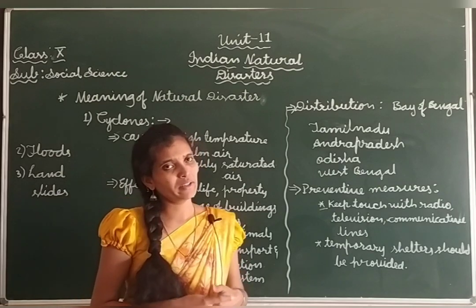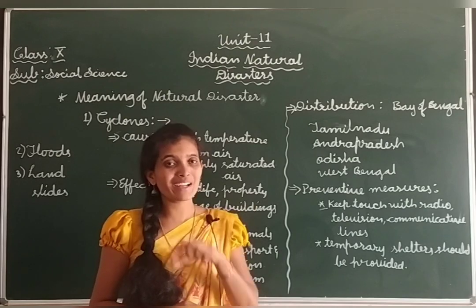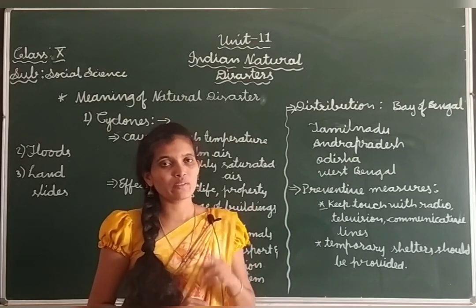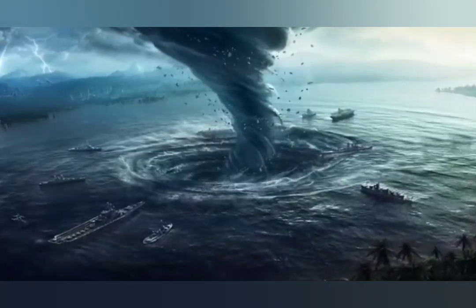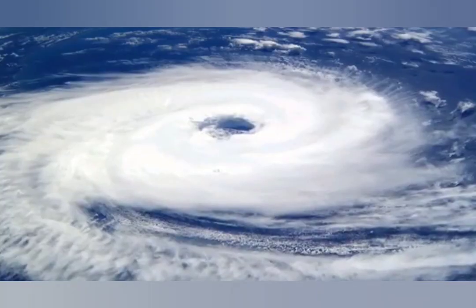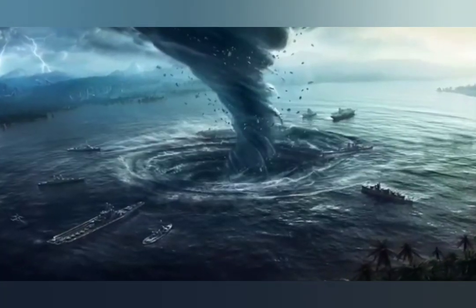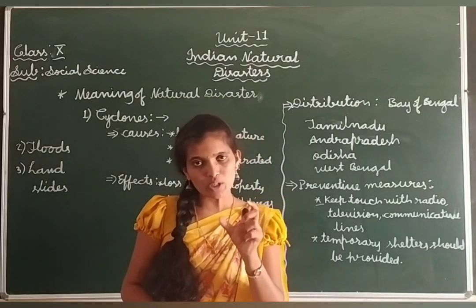How is a cyclone created? I am going to explain with a video clip of cyclone. Here, the wind blows rapidly inwards towards the center of a low pressure area. The cyclone is created in the central region. This disaster is associated with the atmosphere, and the cyclone is completely created by high temperature, calm air and highly saturated air. Cyclone is one of the worst disasters of India. Have you observed that video clip of cyclone and how it was created?